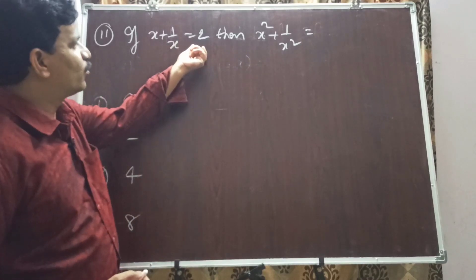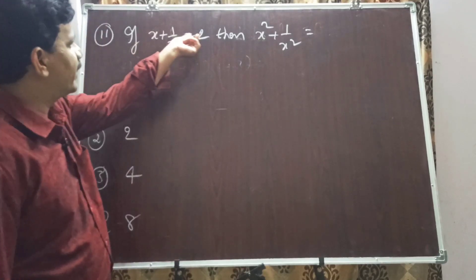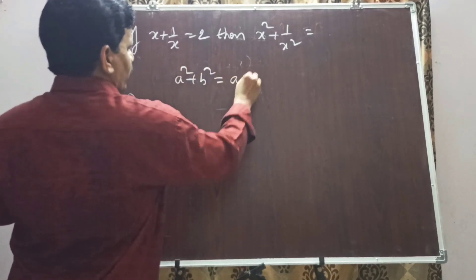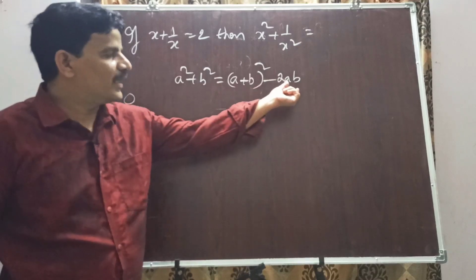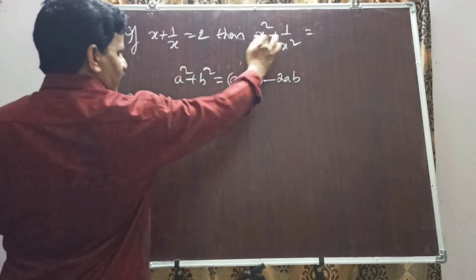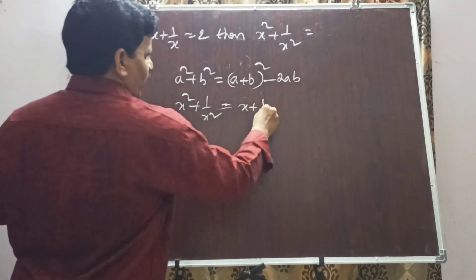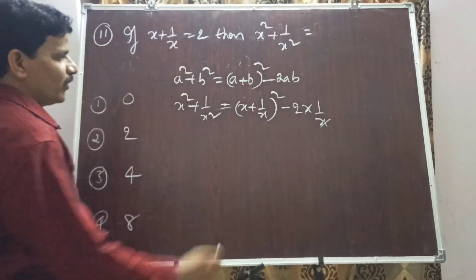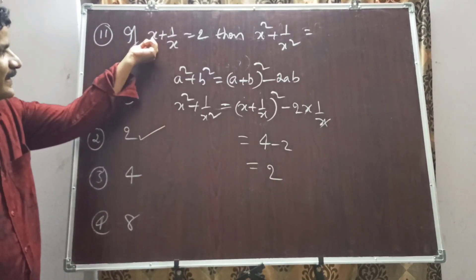Question 11: If x + 1/x = 2, then x² + 1/x² equals how much? This is like: if a + b = 2, then a² + b² = ? Using the formula a² + b² = (a+b)² - 2ab. Here a = x and b = 1/x, so ab = x × (1/x) = 1. Therefore x² + 1/x² = (2)² - 2×1 = 4 - 2 = 2. Option 2 is the right answer.